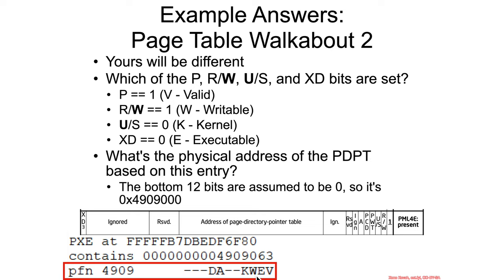And W for writable. The user/supervisor bit, what's set there? Well, that is 0, so that means not user but only supervisor. So 0 is supervisor, which is K for kernel down here in the WinDbg output.